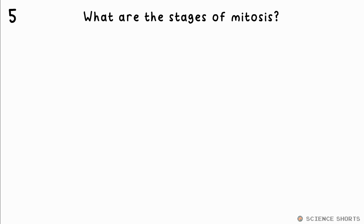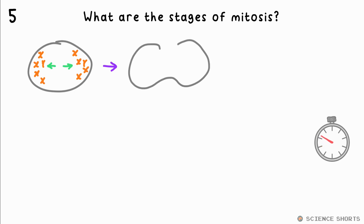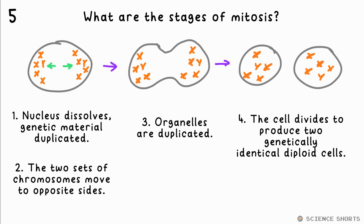Question 5. What are the stages of mitosis? The nucleus dissolves and the genetic material is duplicated. The two sets of chromosomes then move to opposite sides of the cell. The organelles are also duplicated. The cell then divides, producing two genetically identical diploid cells.